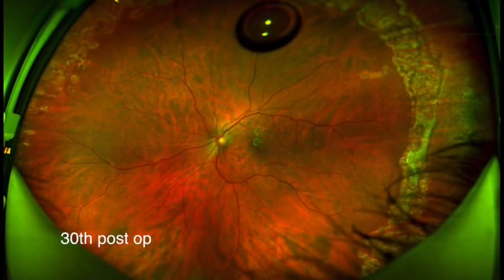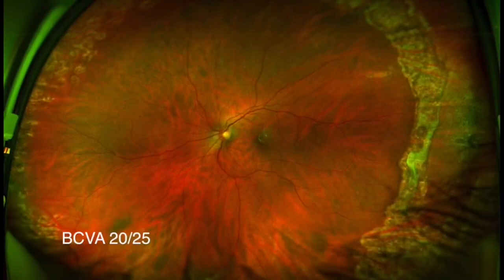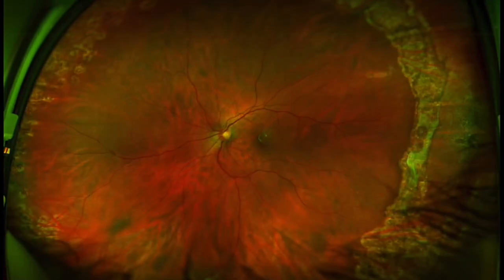We recommend placing a buckle if you aren't able to perform lens removal and IOL placement at the same time. Another situation where an encircling band may be necessary is in cases with PVR.